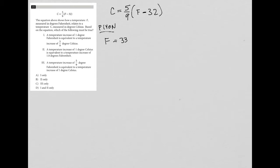So what would happen if F were 33? So if F were 33, I'd have C equals 5/9 times 33 minus 32, which is just 5/9 times one, which of course is just 5/9.